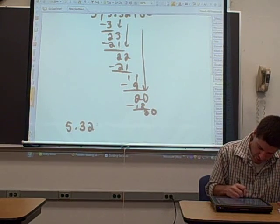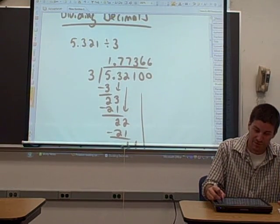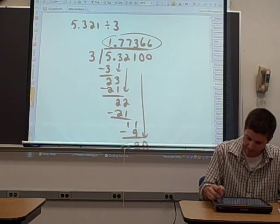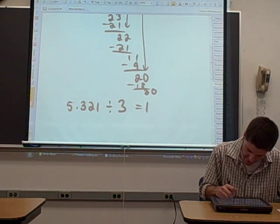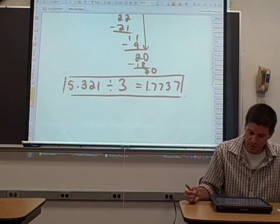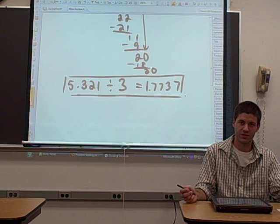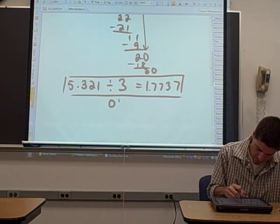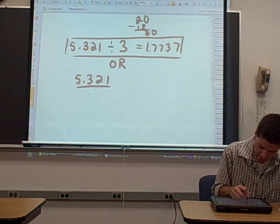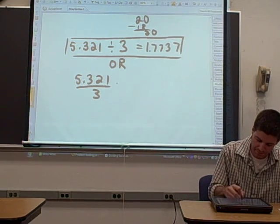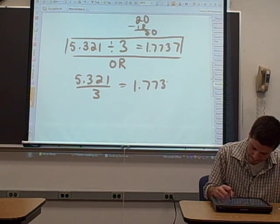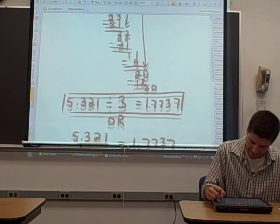So 5.321 was our dividend. Divided by 3 equals our quotient. That number right there. I'm just going to round it. 1.7737. And just as a note, keep in mind that this division can also be written as a fraction. The original problem could be given to you like this. 5.321 divided by 3, written as a fraction. You would do the problem the exact same way and you would get the same answer. Let's make sure I copied that, right? Yep. Great.